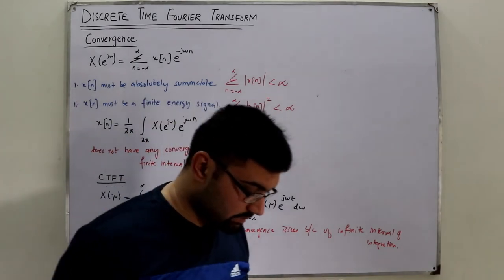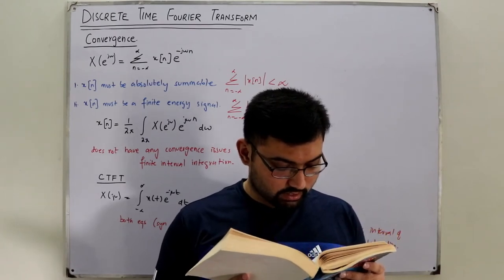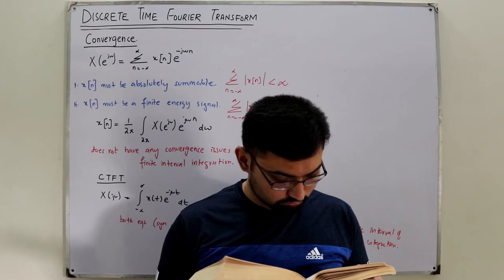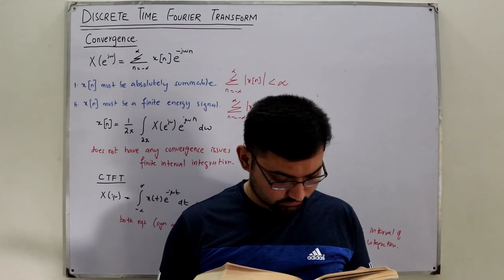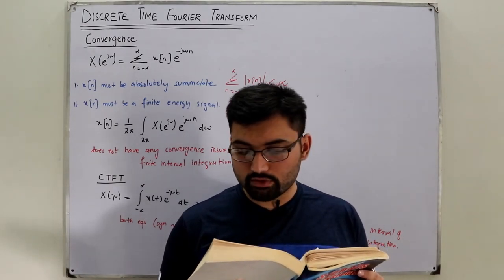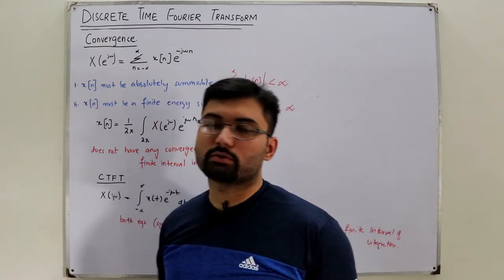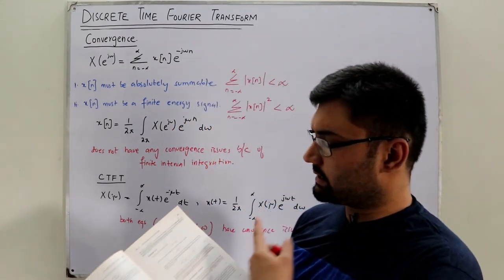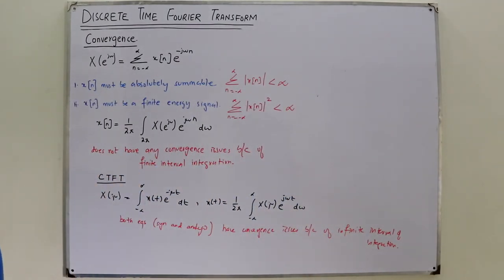The book also confirms the Fourier transform converges if the signal is absolutely summable or has finite energy. They give the example of an impulse signal — as you've seen in the previous video, its Fourier transform is one. I encourage you to read those two or three points yourself. I'll end this lecture here.